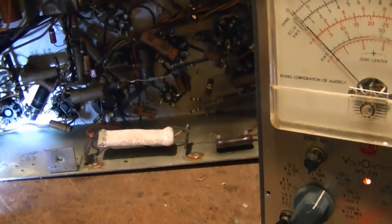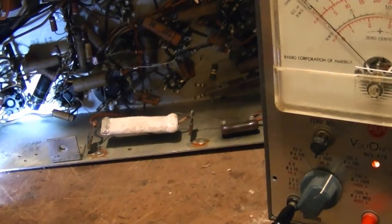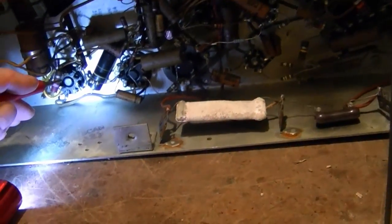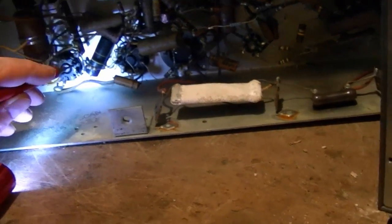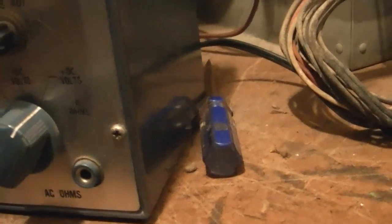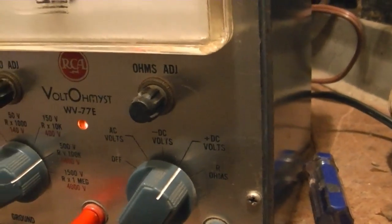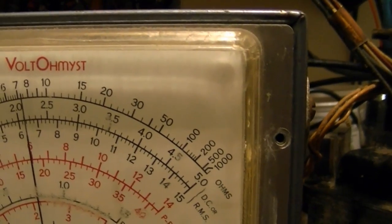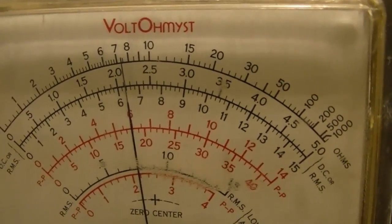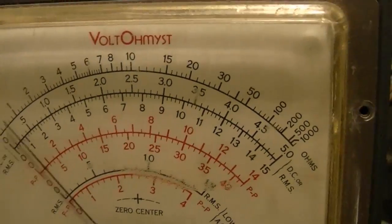I've started doing some voltage checks and found a problem right away. Pin 3 and 4 on the 6K6 vertical output tube should be 300 volts, but I've only got a little over 200, like 210, 215 or so. Something's not right there.